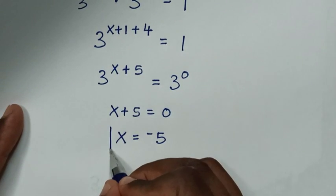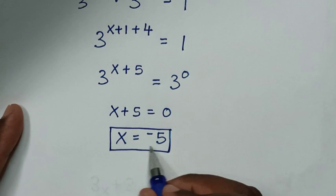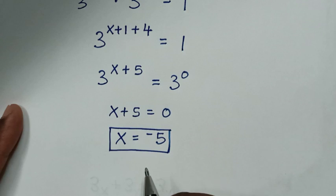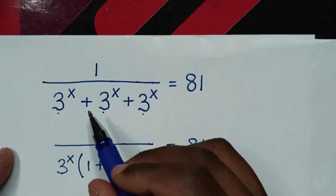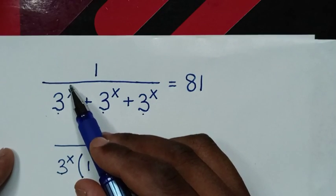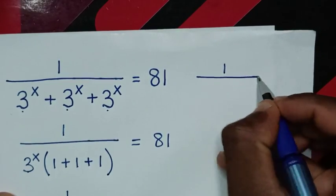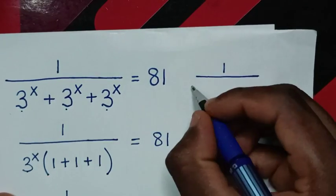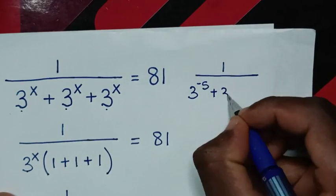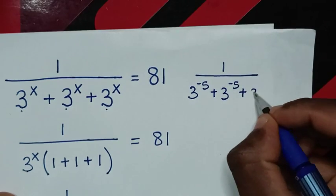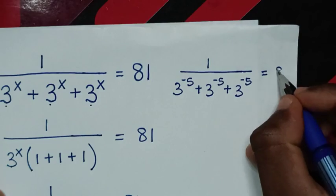Therefore, this is the final answer: x is equal to negative 5. Now, let's check if this value is correct. We substitute x = negative 5 back into the original problem: 1 over (3^(negative 5) + 3^(negative 5) + 3^(negative 5)) — is it equal to 81?